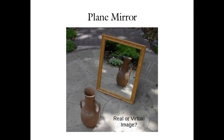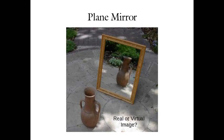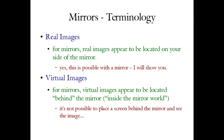Revisiting the picture of the plain mirror: we have a clay jar and we see its reflection appearing to be located on the other side of the mirror. If you were to put a camera behind the mirror, you'd see nothing. This is a virtual image — your eye makes it real, but it's not physically located on the other side of the mirror.